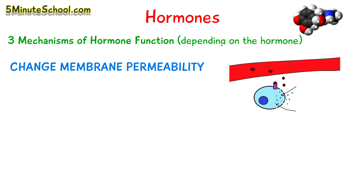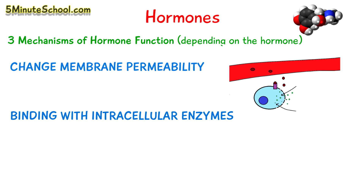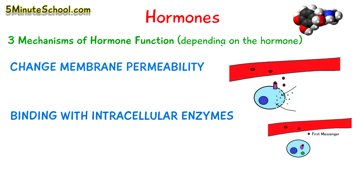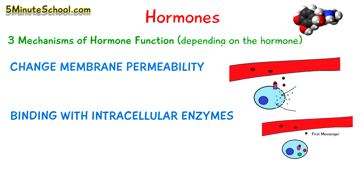Another mechanism is by binding activated intracellular enzymes. In this case, the hormone is known as the first messenger. The hormone binds to the receptor and forms the hormone receptor complex. This complex activates a certain enzyme in the cell, which causes the formation of another substance called a second messenger. The second messenger is what causes the effect of the hormone in the cell.